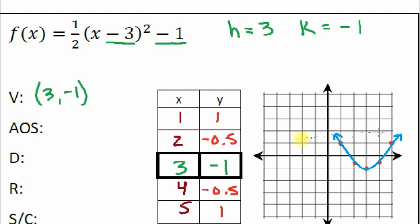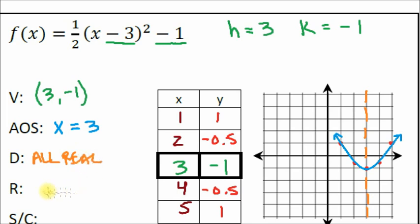Now let's identify the other values. Axis of symmetry is x equals the x-value of the vertex, because the axis of symmetry goes right through the vertex — so x equals 3. Domain is always all real numbers. Range: since the parabola faces up, we look at the y-value of the vertex.